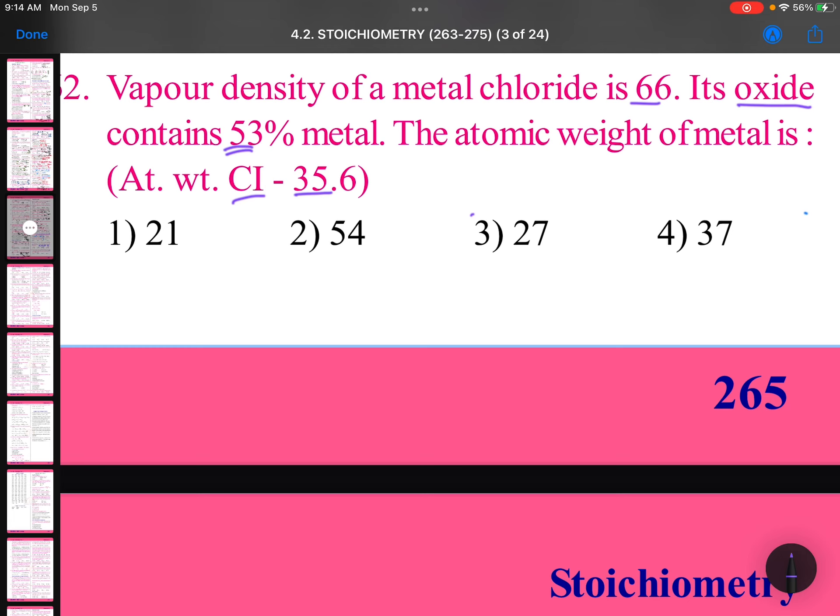53 grams of metal joins with 47 grams of oxygen. If 8 grams of oxygen is taken, how many grams of metal will be there? 8 × 53/47, so that equals 9 grams.